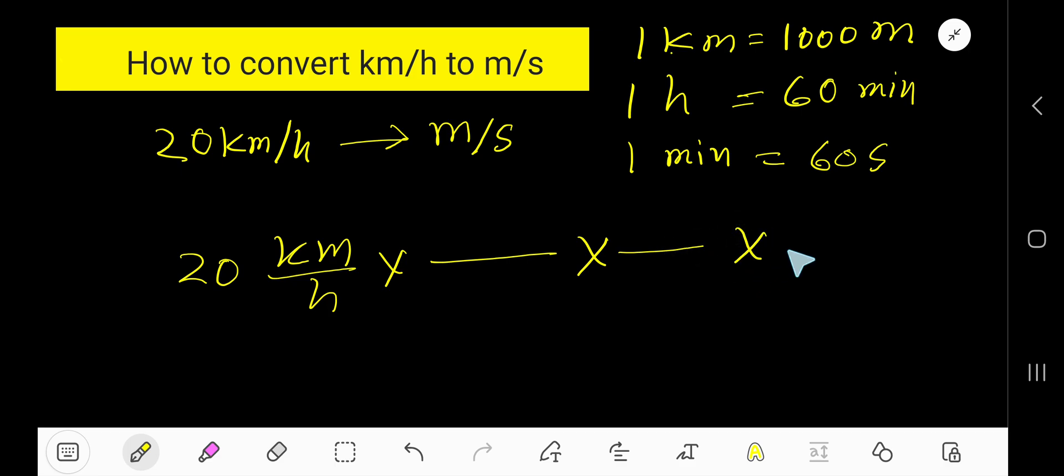We'll convert kilometer to meter, that is top unit to top unit, using this conversion equation: 1 kilometer equals 1000 meters. To cancel kilometer, we'll write kilometer at the bottom, and with kilometer we have 1000 meters.